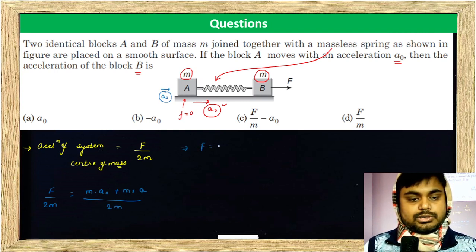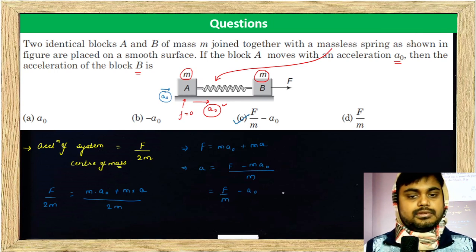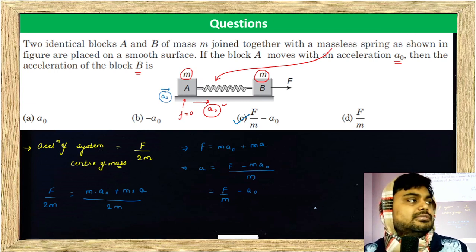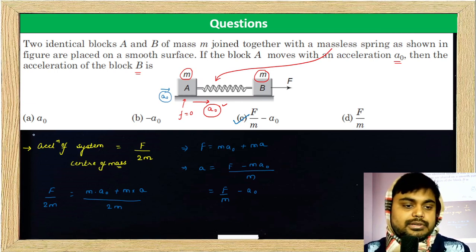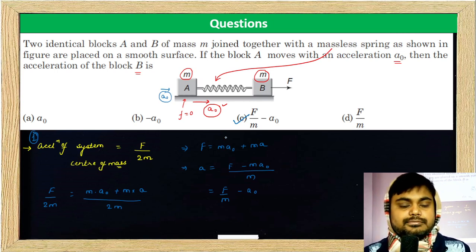F is equal to M A₀ plus M A. X is equal to F minus M A₀ upon M, which equals F by M minus A₀. Yes or no? Yes, this is method one.